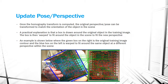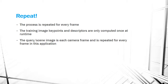Once the homography transform is computed, the original perspective or pose can be transformed to match the orientation of the object in the scene. Practically, a box is drawn around the original object in the training image, then warped to fit around the object in the scene at the new perspective. An example is shown where the green box on the right is the original training image contour and the blue box on the left is warped to fit around the same object at a different perspective. This process is repeated for every webcam frame, though training image key points and descriptors are only computed once at runtime.